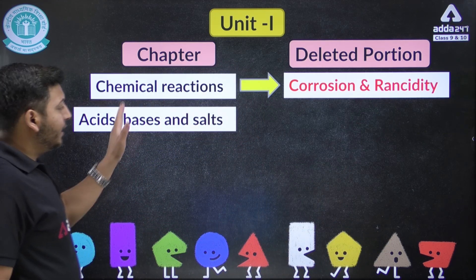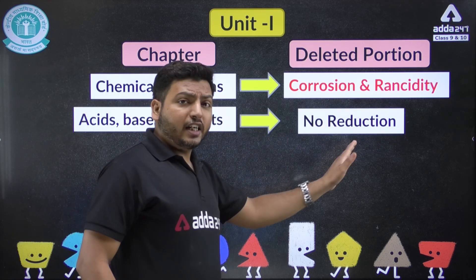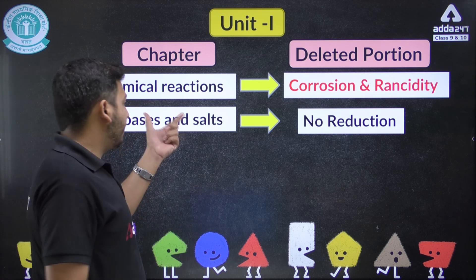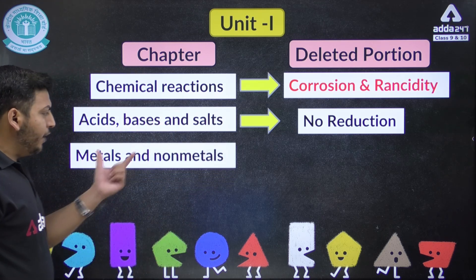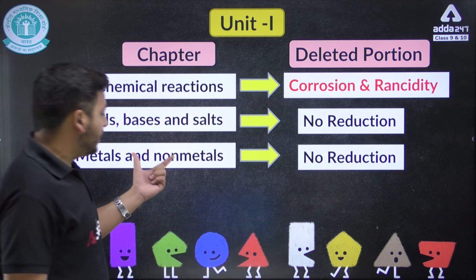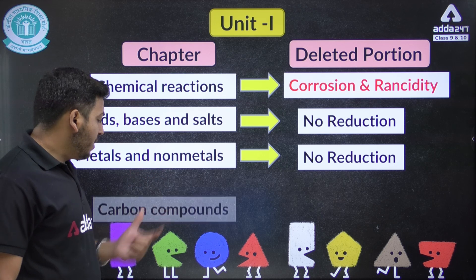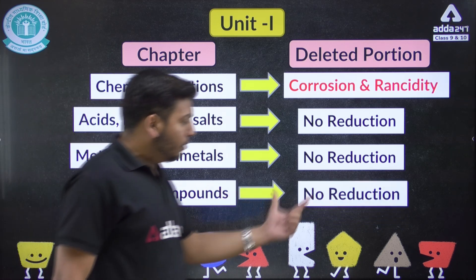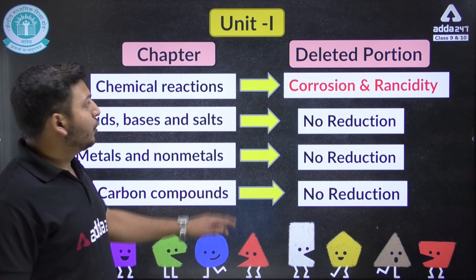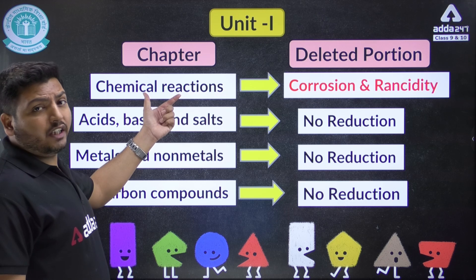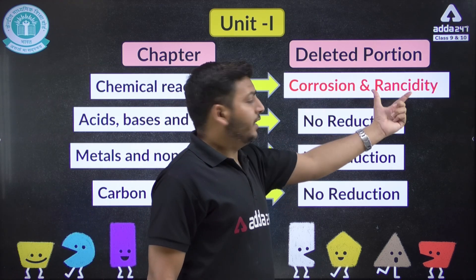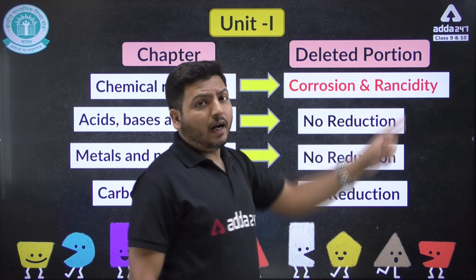For the Acids, Bases and Salts chapter, there is no reduction — the entire chapter is important and you will have to read it fully. For Metals and Non-Metals, there is also no reduction; it will be asked in the board exam. For Carbon Compounds, there is also no reduction — read the whole chapter. So in Unit 1, only corrosion and rancidity from the Chemical Reactions chapter are deleted.